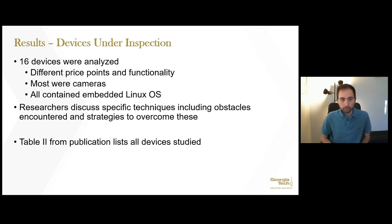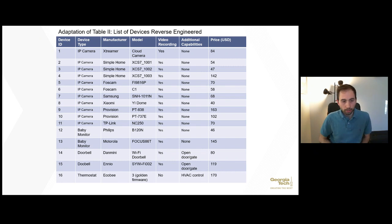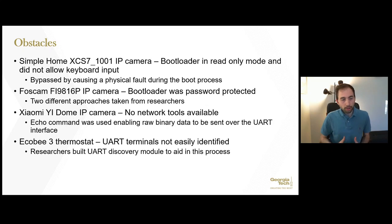Overall, the researchers inspected 16 devices and analyzed different features on all of them. All the devices were of various price points and functionality; many were cameras — most of them in fact — and all contained an embedded Linux OS. The researchers discussed specific techniques including obstacles encountered and strategies to overcome them. Table 2 lists all the devices studied; 11 out of the 16 devices are IP cameras and they all range in price from the low-end to mid-range.